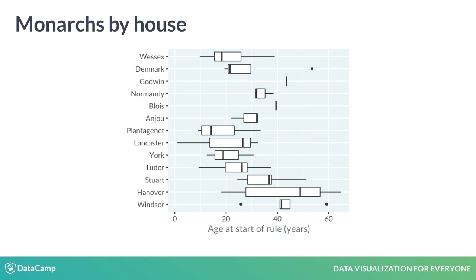The power of box plots is that you can compare many distributions at once. Here, the royal houses are ordered from oldest at the top to newest at the bottom. A trend is visible: since the Plantagenets in the 14th century, the boxes gradually move right, showing that the ages when new monarchs ascend to the throne have been increasing. Godwin and Blois appear as a single line, because there was only one king from each house.